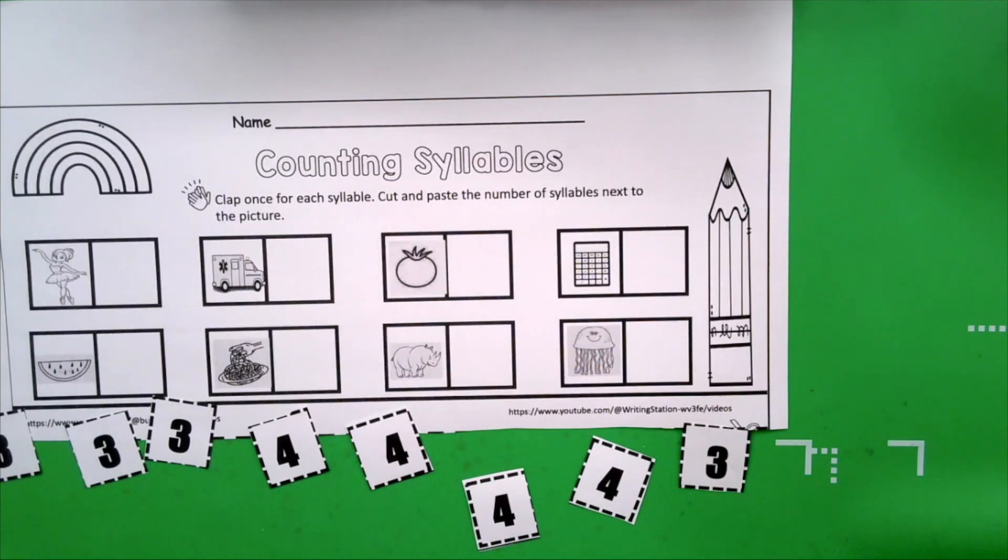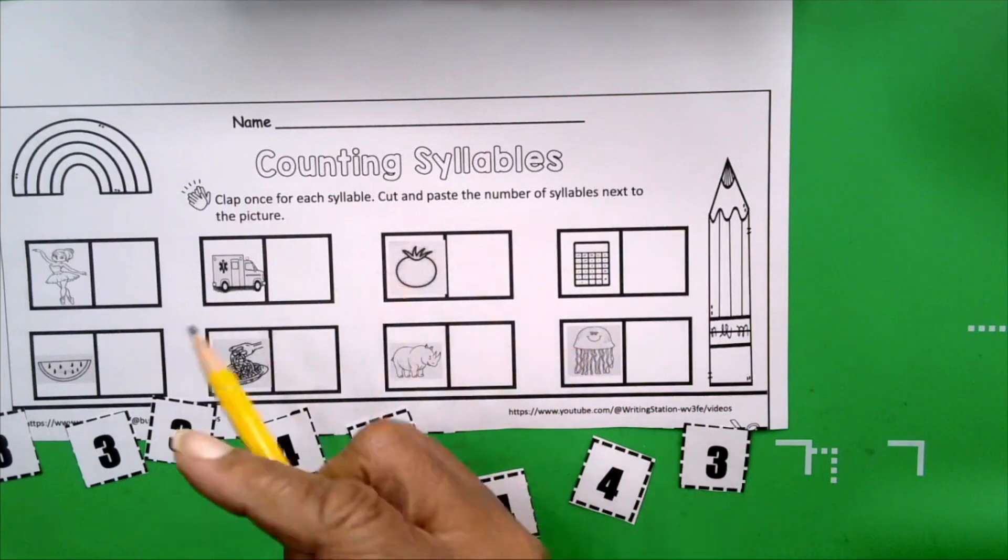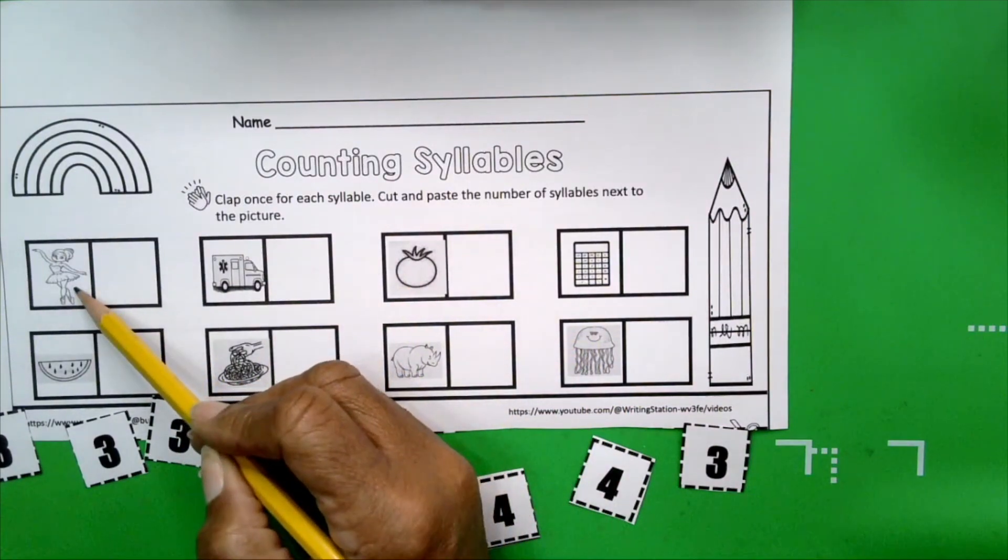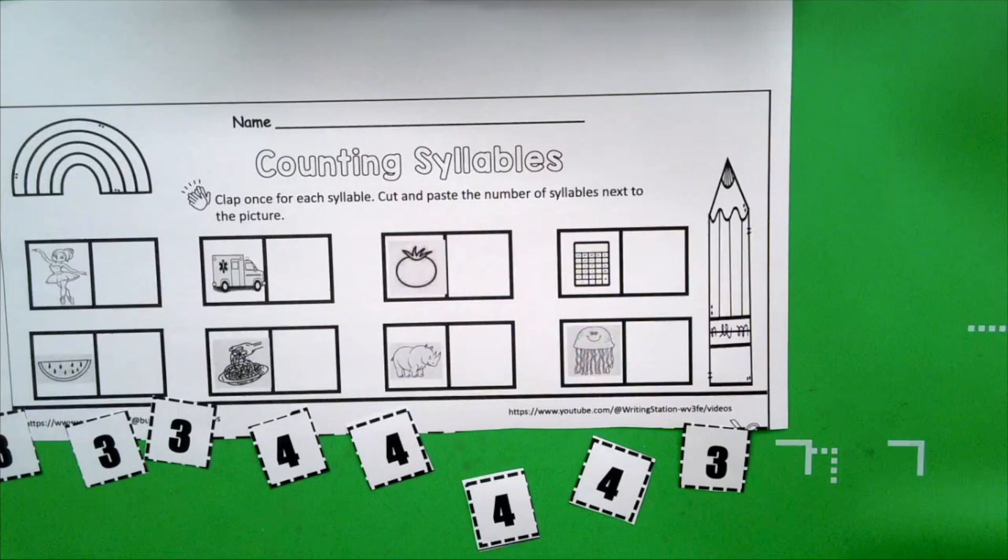Now take a look at our first picture. The first picture is of a ballerina. Say it boys and girls. Ballerina. Get your hands ready. Ballerina. How many claps did you hear? Let's do it again. Ballerina.